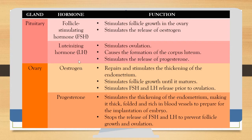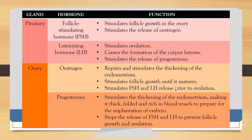The third hormone group is secreted by the ovary itself: estrogen and progesterone. The function of estrogen is to repair and stimulate the thickening of the endometrium wall after menstruation. Estrogen also stimulates follicle growth and stimulates FSH and LH release prior to ovulation.